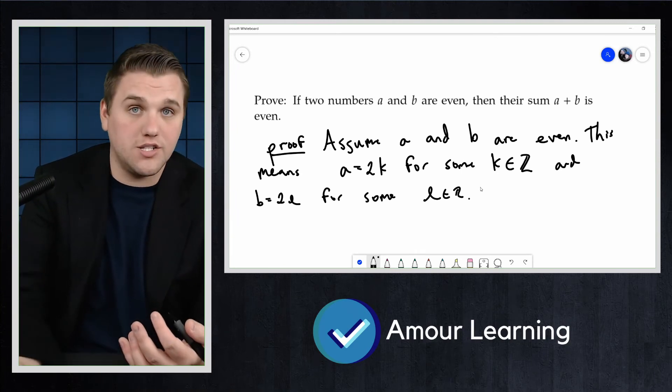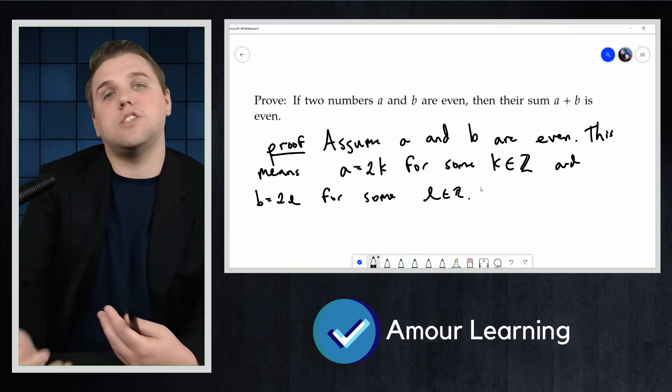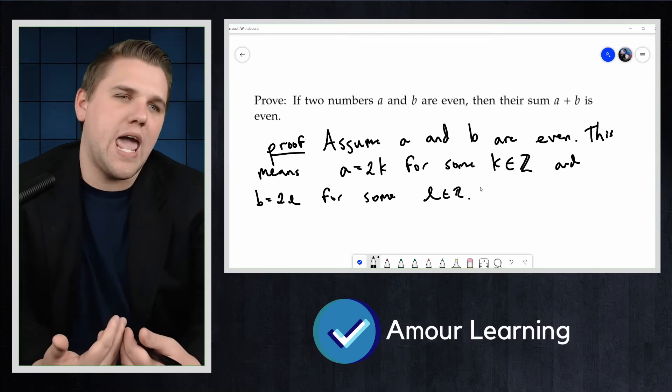So I haven't assumed anything extra. I'm just using the definitions of what it means to be even. And then I'm going to use these to my advantage to try to show that A plus B is even.